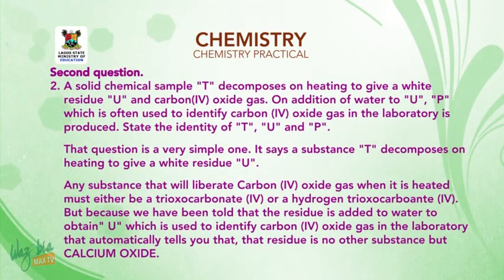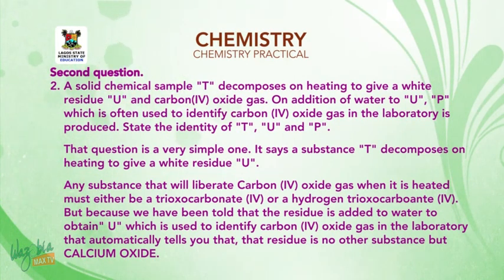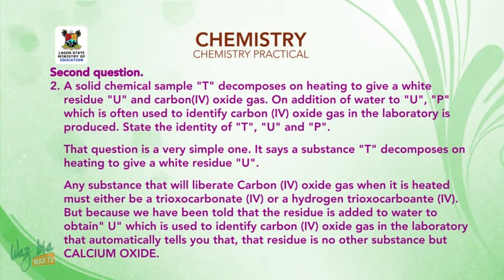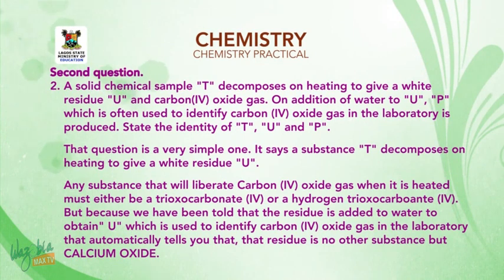Second question: a solid chemical sample T decomposes on heating to give a white residue U and carbon dioxide gas. On addition of water to U, substance P — which is often used to identify carbon dioxide gas in the laboratory — is produced. State the identity of T, U, and P.